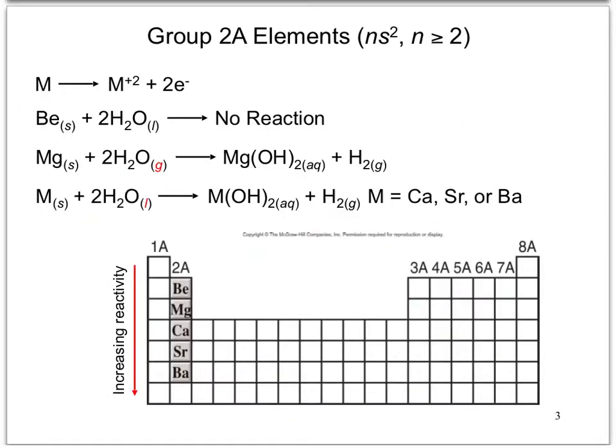The alkaline earth metals have similar properties to the alkaline metals. They form plus-two cations. Beryllium is inert to liquid water, and magnesium reacts vigorously with steam.